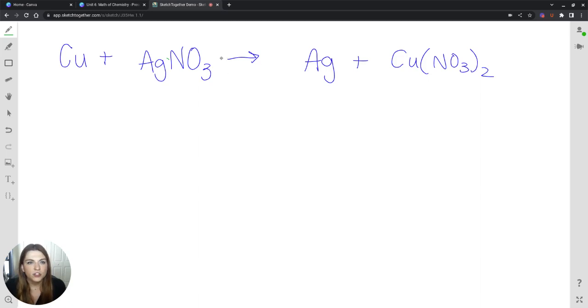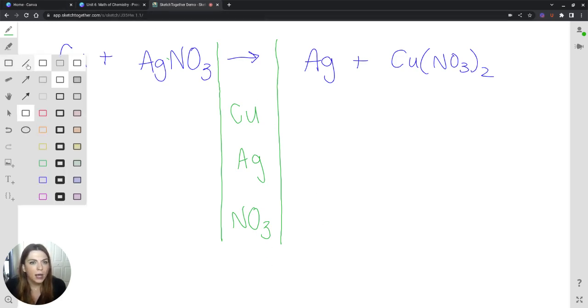So my strategy for balancing chemical equations is to draw vertical lines right here and list all of the elements that I'm working with. I like to think of chemical reactions as a before and after. So I would list copper, silver, and now I could list nitrogen and oxygen, but this together makes a polyatomic ion. And this polyatomic ion is not decomposed over the course of the chemical reaction. So I'm going to hold it all together because it's a poly. It's a bundle of atoms that works together and carries a charge. So that three is part of the poly. So I'm going to hold that while I balance.